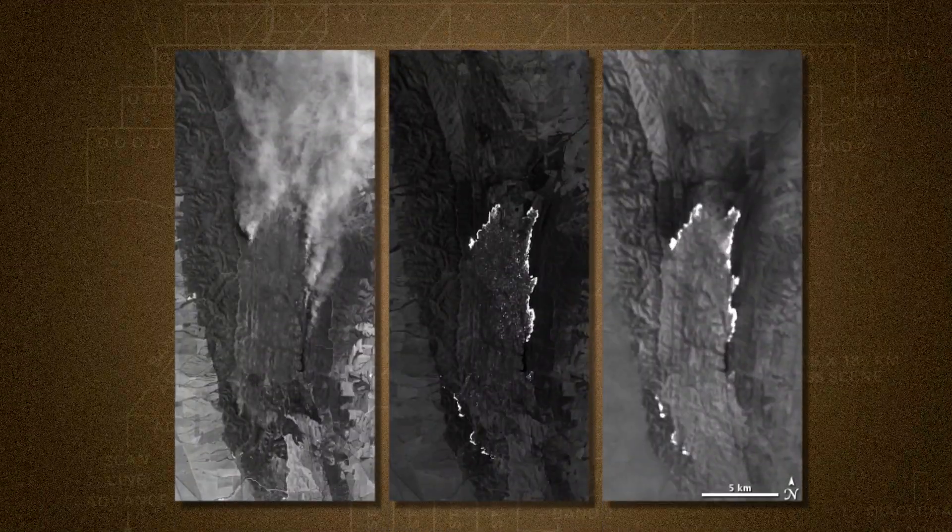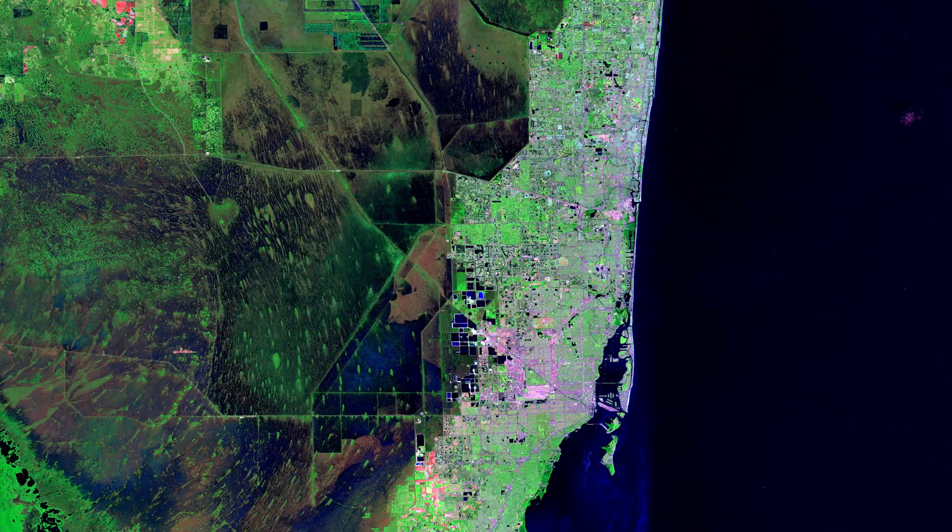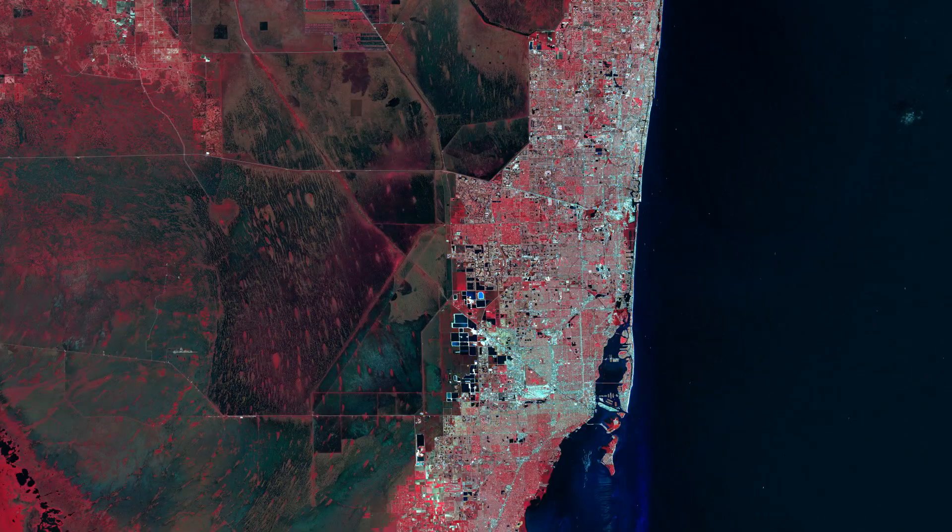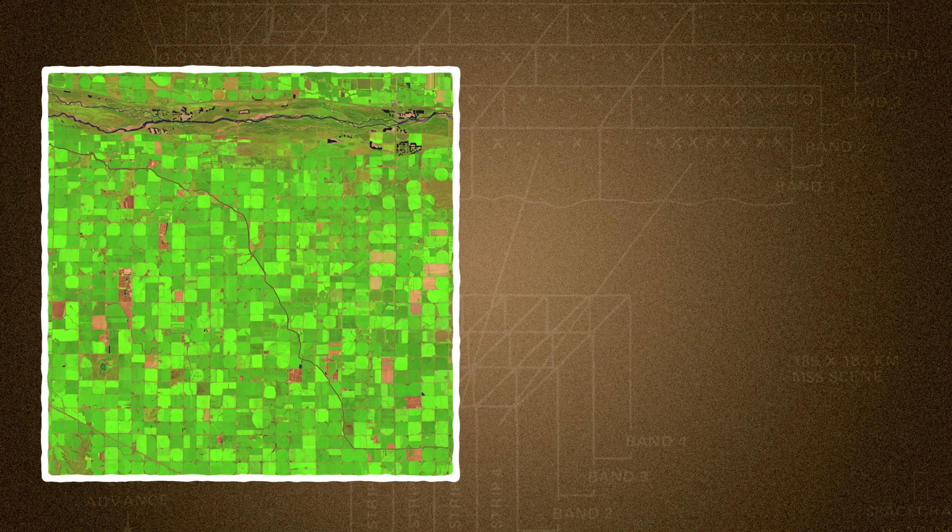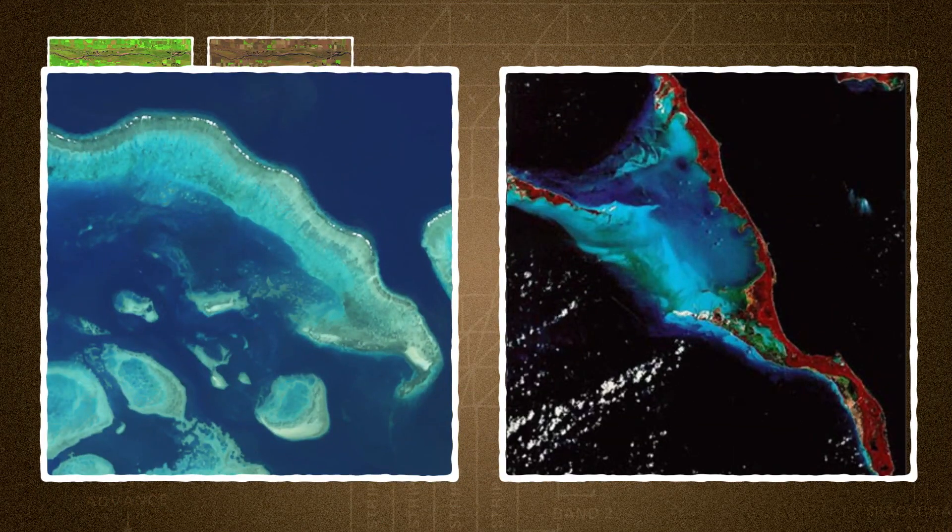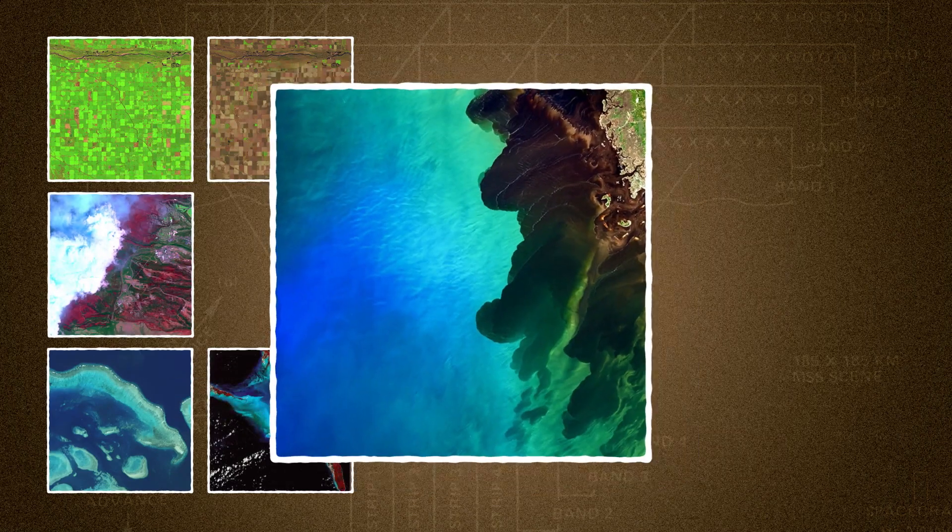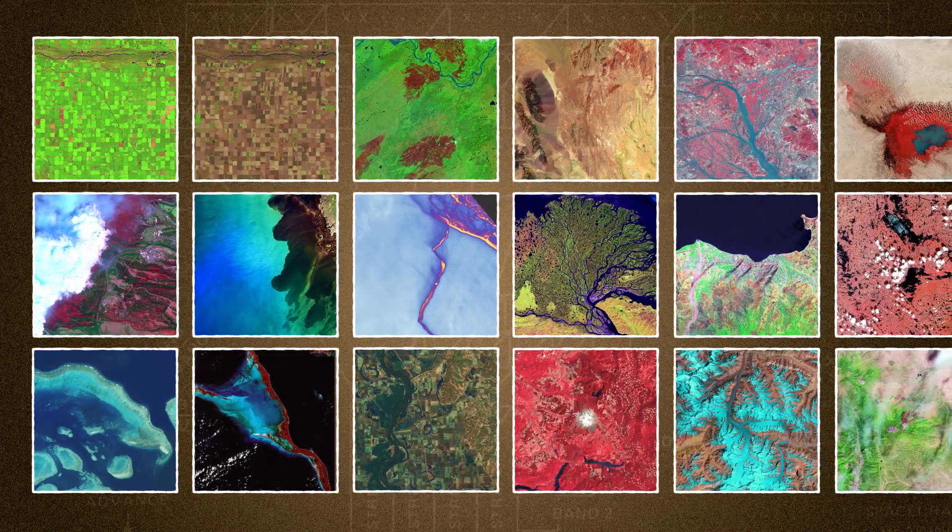Landsat also captures light that we can't see. That type of light can reveal some incredible things when you look at a false color image. Like the difference between types of plants, how healthy those plants are, healthy coral reefs and even dead coral reefs, fire tracking, ocean pollution. The possibilities are nearly endless.